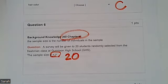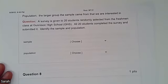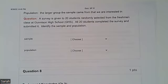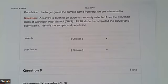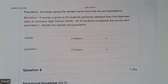And then one more from this first week of material. This is on a sample and population. So we're still going to be working with this idea from Gunnison High School. So a survey is given to 20 students randomly selected from the freshman class at Gunnison High School. All 20 students completed this survey and submitted it. Identify the sample and population.